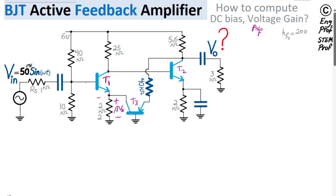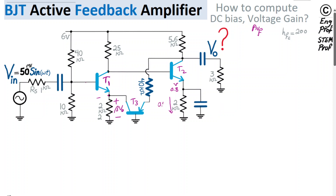Let's start with the DC bias analysis. The information provided is 0.8 V at that node. Because we have a 2 kΩ resistor with 0.8 V across it, 0.8 V divided by 2 kΩ gives 0.4 mA. So the DC emitter current of transistor T2 is 0.4 mA.